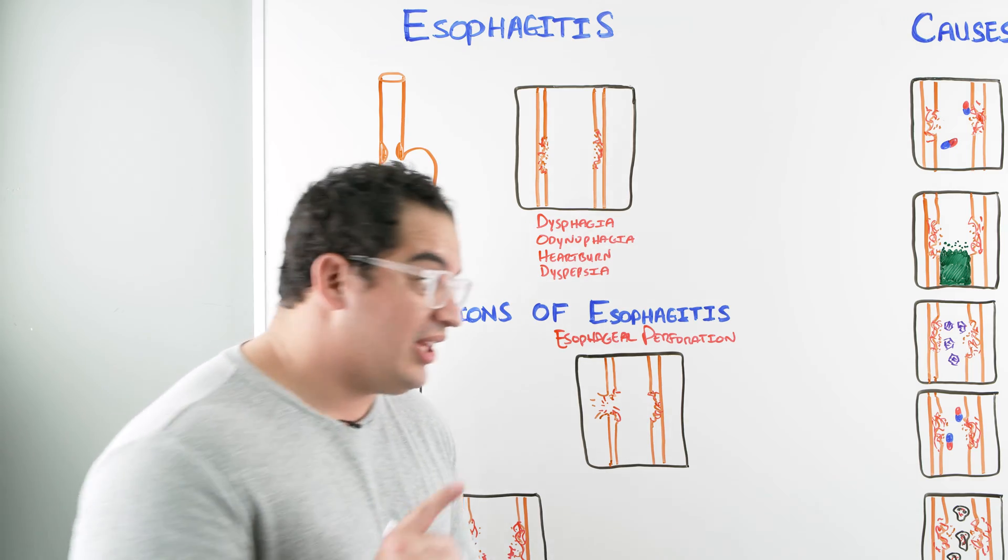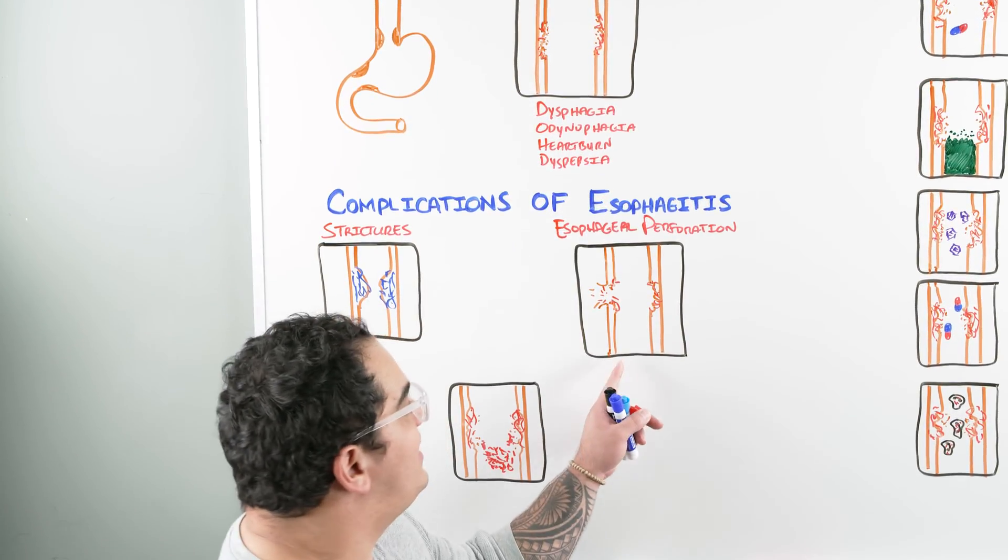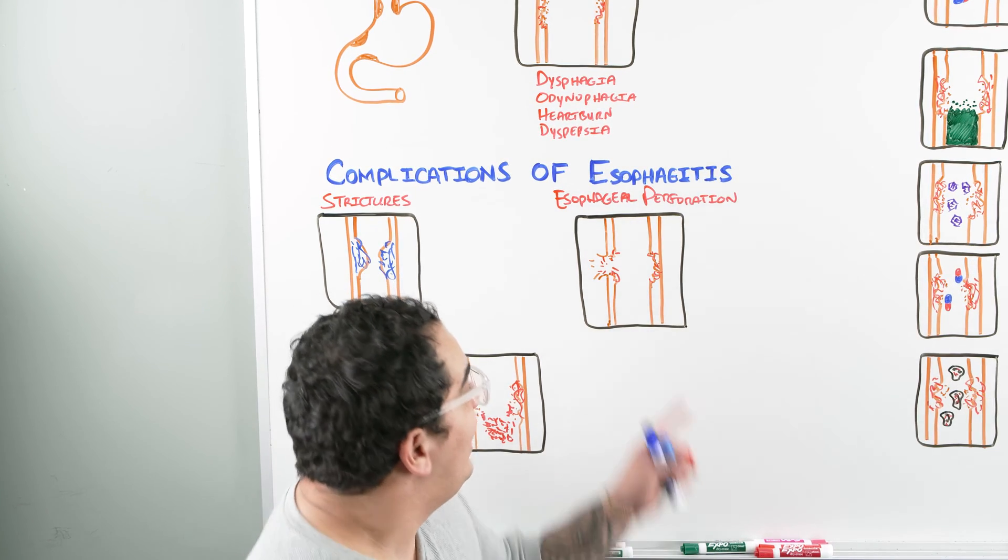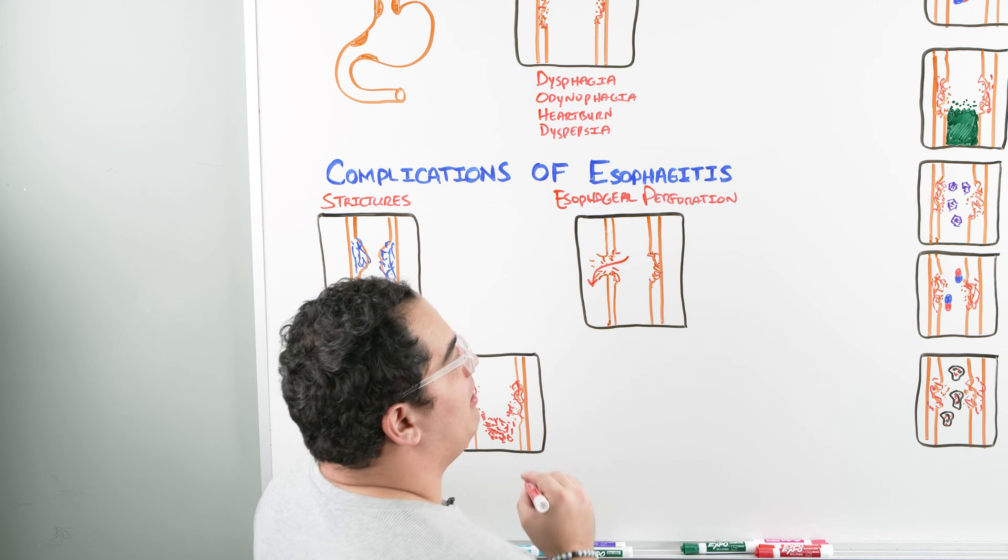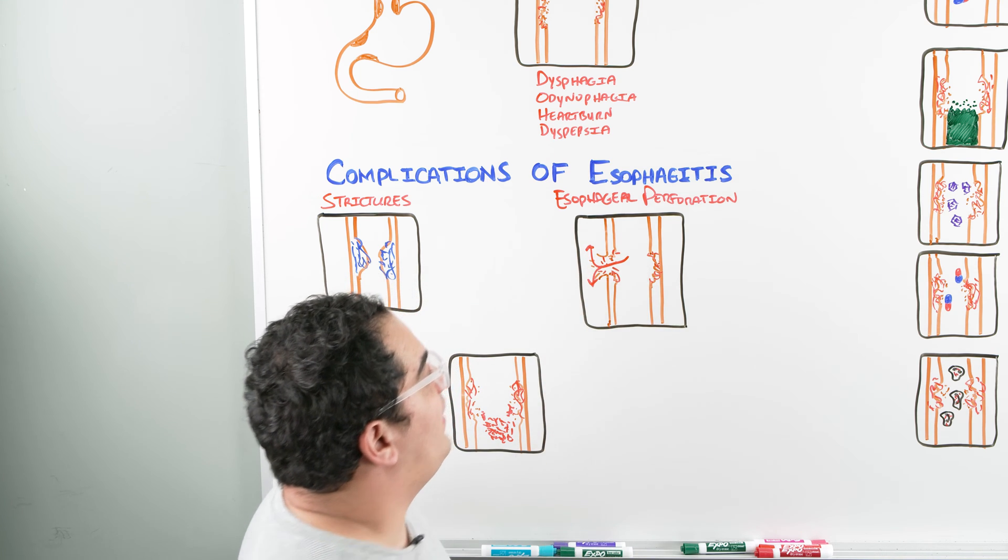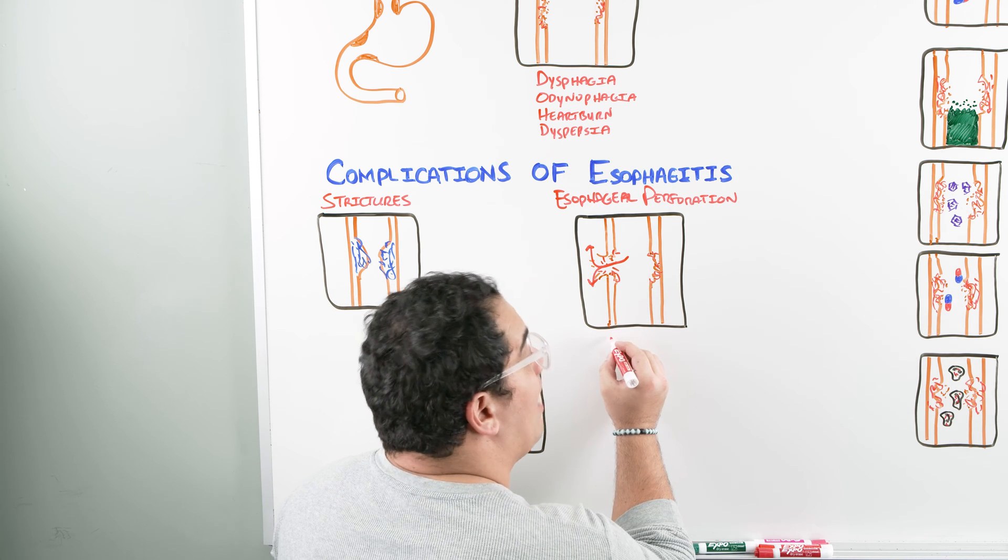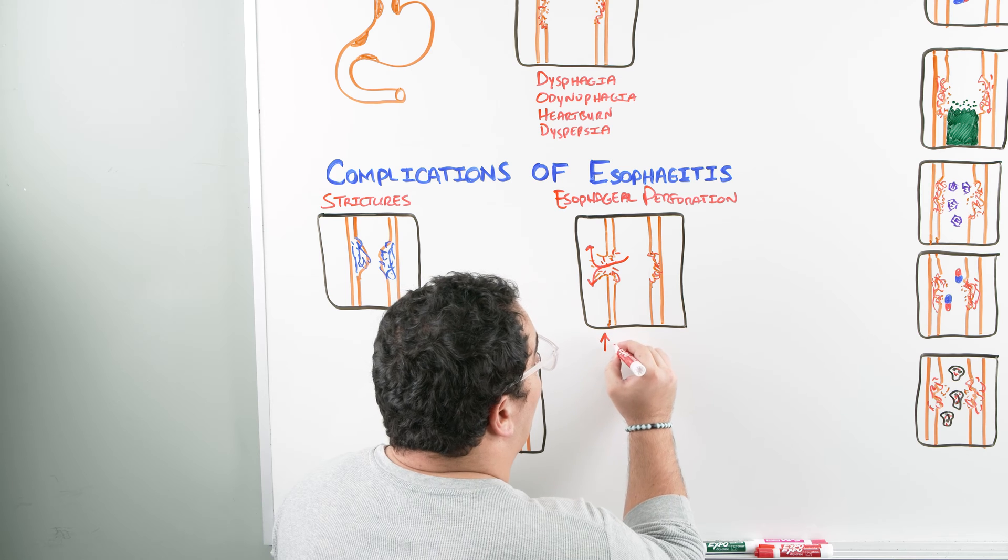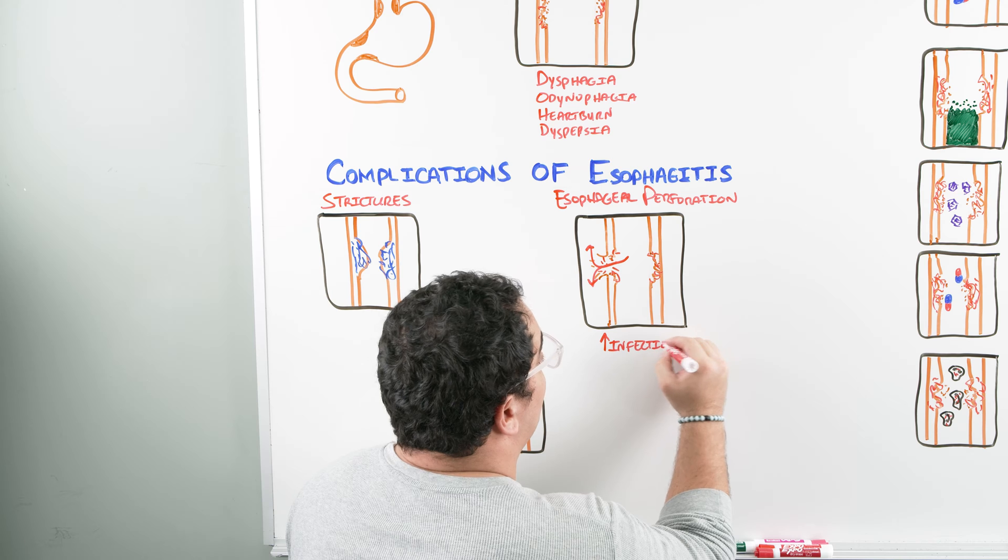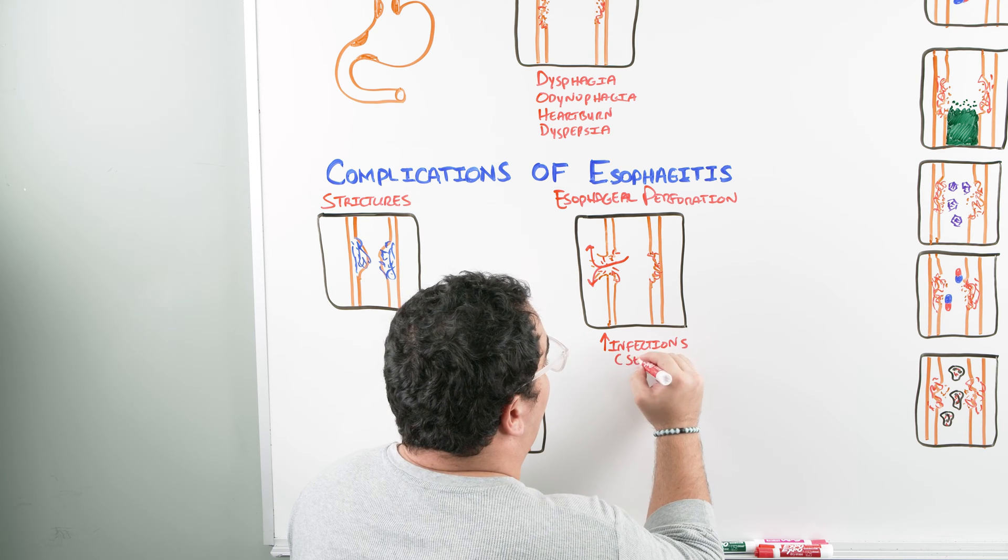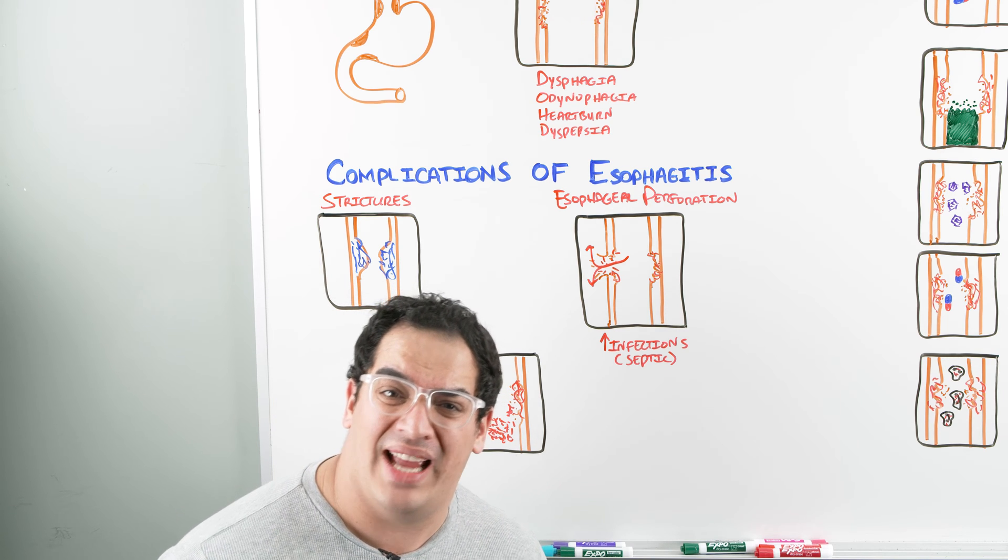Esophageal perforation is a really scary complication. What are the scary features associated with it? If you perf this sucker, you can cause air to enter into the mediastinum. You can cause a lot of different agents to move into the mediastinum. This can literally lead to a patient becoming septic, so you really want to watch out for any kind of scary risk of infections.